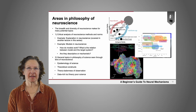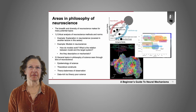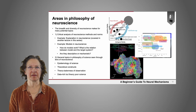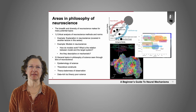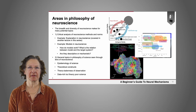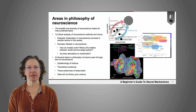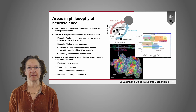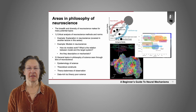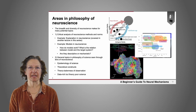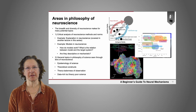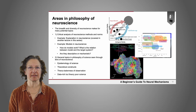I'm going to talk about some of the areas in philosophy of neuroscience. The breadth and diversity of neuroscience makes for many potential topics — some that haven't even begun to be explored. But some of the major topics include a critical analysis of neuroscientific methods and norms. One example is the question of explanation in neuroscience, which is covered in another lecture in this series.